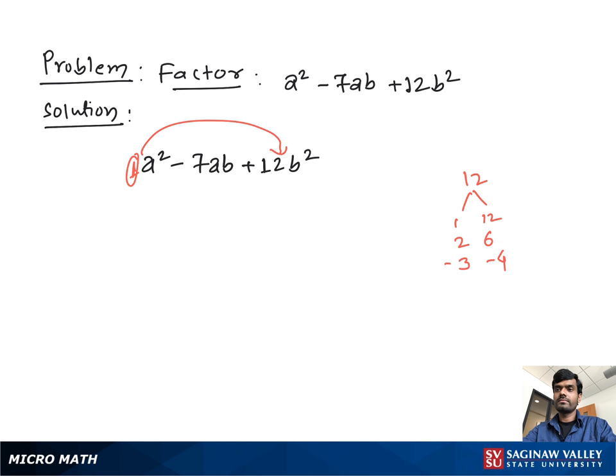Now find a pair of numbers which multiply to give positive 12 and add to give negative 7. That's -3 and -4. So we can write: a² - 3ab - 4ab + 12b².